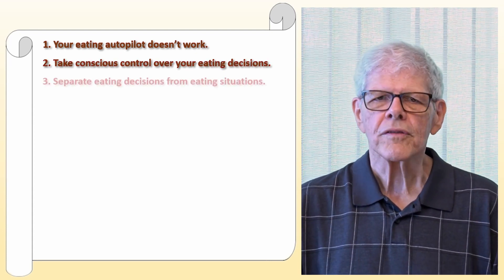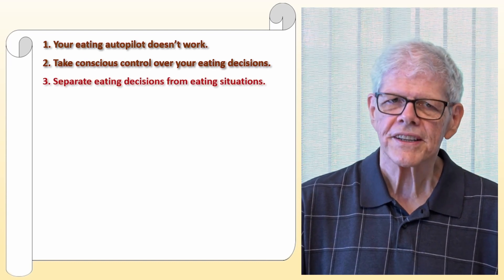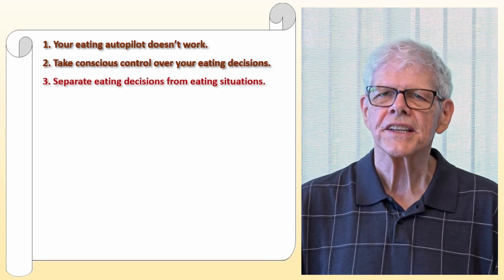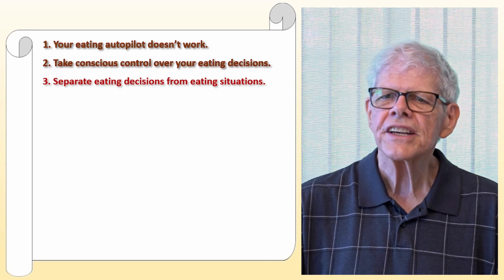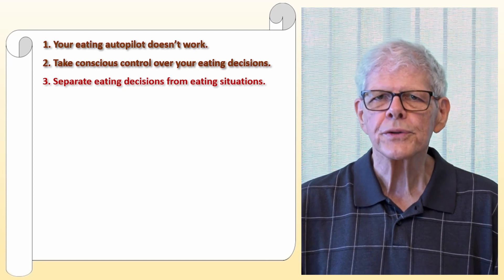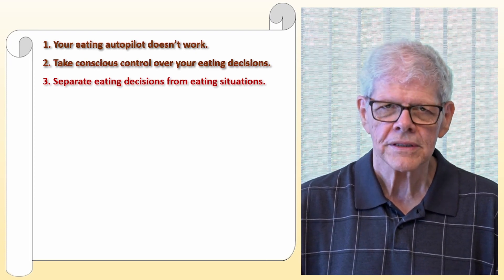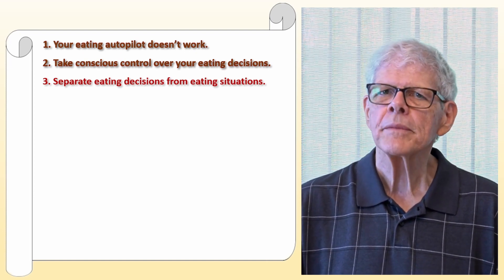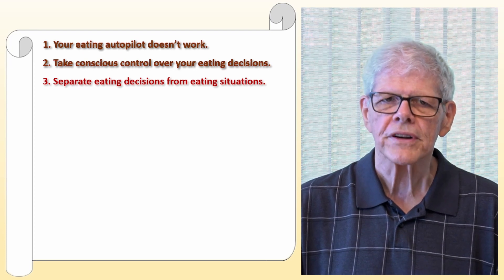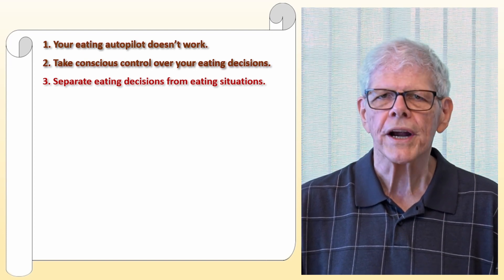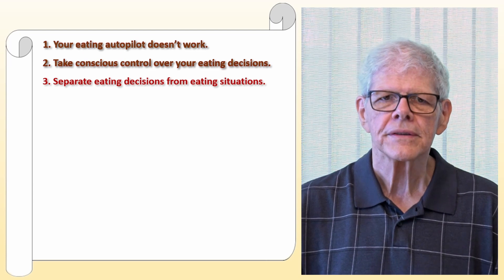The way to overcome a dysfunctional autopilot and the bad decisions you make in an eating situation is to make as few decisions as possible, and to make them at a time and place that is separate from where and when you will actually eat the food.